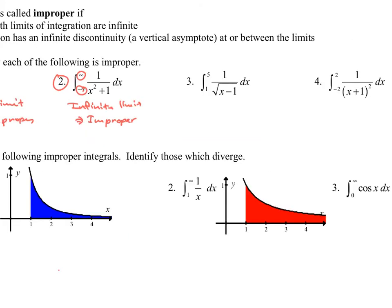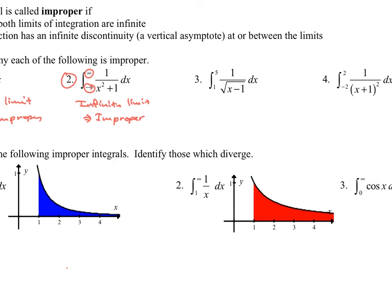Number three might not be as obvious. When you're not specifically looking for it and all these integrals are mixed together, you do have to be on your toes. If I take the limit of integration and plug in x = 1, I do have a point of discontinuity — a vertical asymptote at x = 1. So we have an infinite discontinuity at or between the limits, and the vertical asymptote tells us that we are improper.